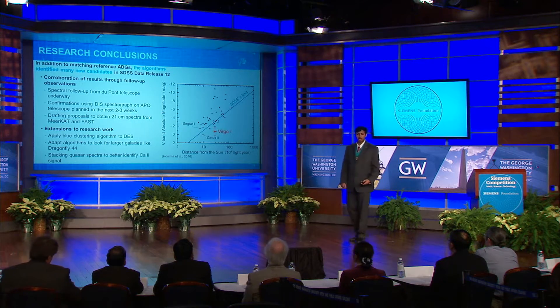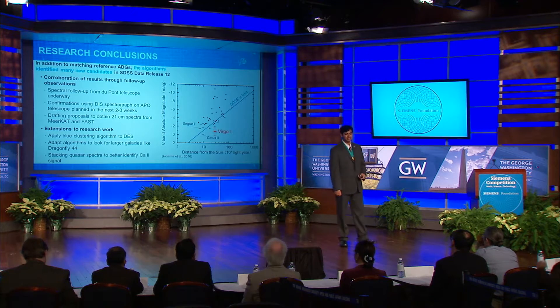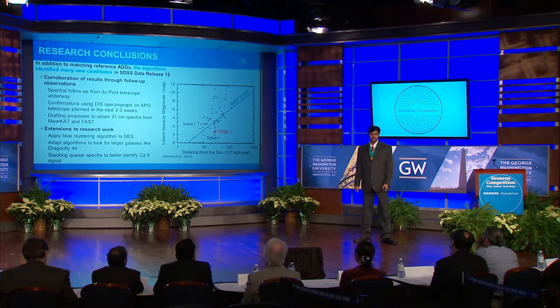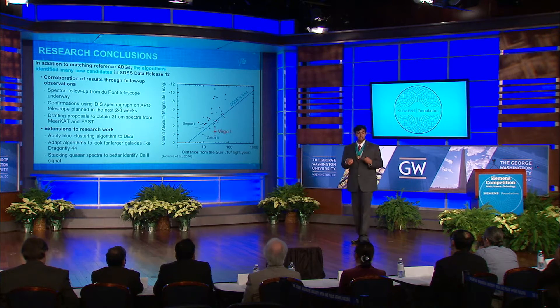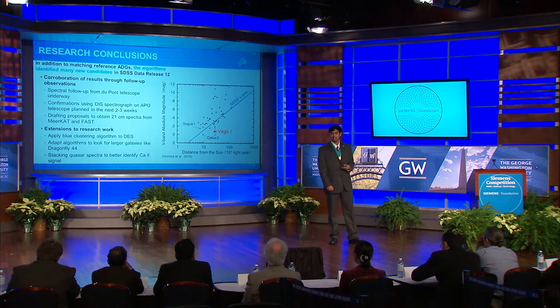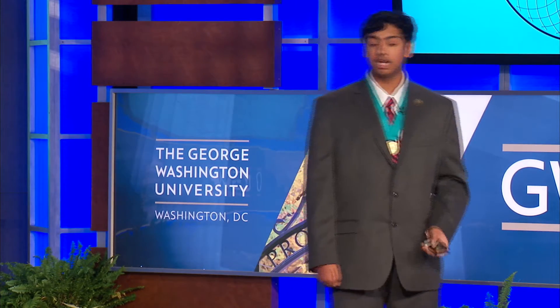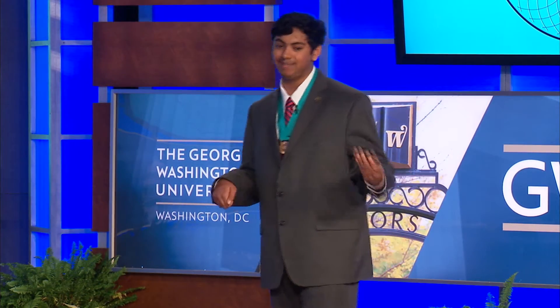There are several avenues I'm pursuing to continue my work. On the graph of absolute magnitude versus distance, the blue line represents the SDSS limit, and there are several black dots just below that limit, the majority of which are satellite galaxies identified by the Dark Energy Survey. I'm looking to apply the blue clustering algorithm to DES to find fainter ADGs, since DES has a larger aperture telescope and a more sensitive camera. I'm also looking to adapt the algorithms to look for larger galaxies like Dragonfly 44, a recent breakthrough — a dark galaxy that's almost the size of the Milky Way, which is contrary to the typical ADG mass range of 10 to the 7 to 10 to the 9 solar masses.